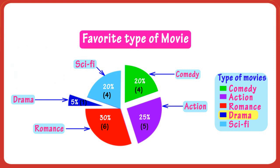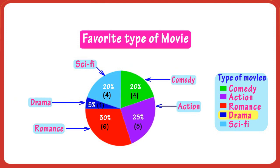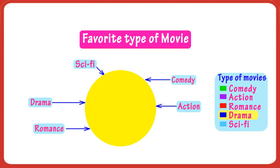So when we have to show percentage values, we use a pie chart, where the percentage portion of a circle represents the percentage value, and the whole set of things is represented by a whole circle.